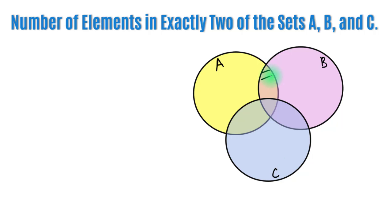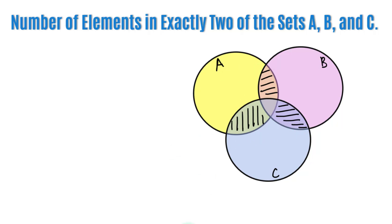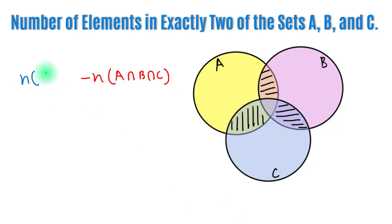This region represents exactly A and B, this region represents exactly A and C, and this region represents exactly B and C. To get exactly A and B, we subtract the number of elements in A∩B∩C from the number of elements in A∩B. Similarly, to get exactly A and C,